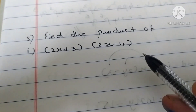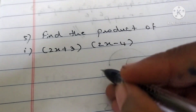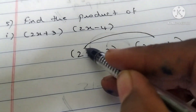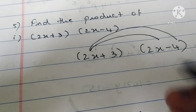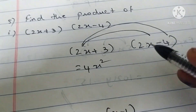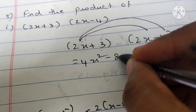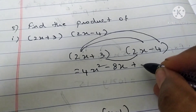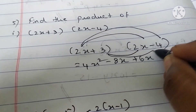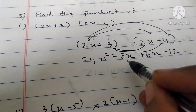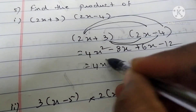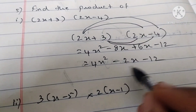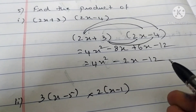Find the product of 2x plus 3 and 2x minus 4. First multiply 2x with both terms: 2 times 2 is 4, x into x is x square, so 4x square. Then 2x into minus 4 gives minus 8x. Next multiply 3 with both terms: 3 times 2 is 6x, and 3 times 4 is 12, with minus sign giving minus 12. Combining x terms: minus 8x plus 6x gives minus 2x. The answer is 4x square minus 2x minus 12.